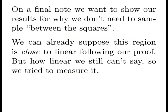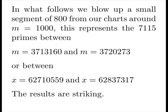On a final note, we want to show our results for why we don't need to sample between the squares. We've only sampled at the squares. We can already suppose this region is close to linear following our proof. But how linear, we still can't see. So we tried to measure it. And what follows, we blow up a small segment of 800 samples from our chart around m equals 1,000. This represents the 1,000 primes between here and there. Or for the squares between here and there. The results are striking.